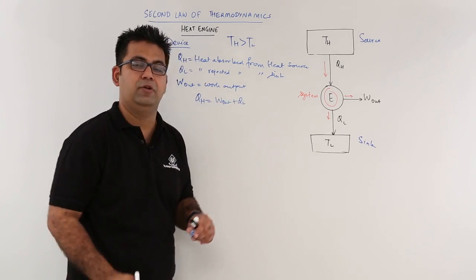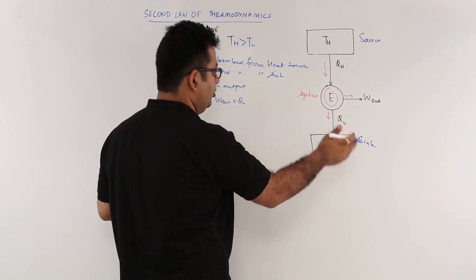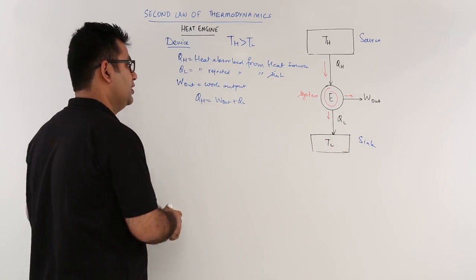So input energy is always higher as compared to the output work. You can never have QL to be zero. That is the subject we will be discussing about.